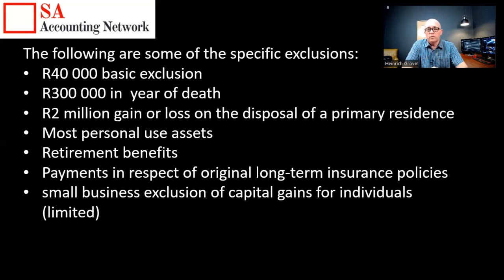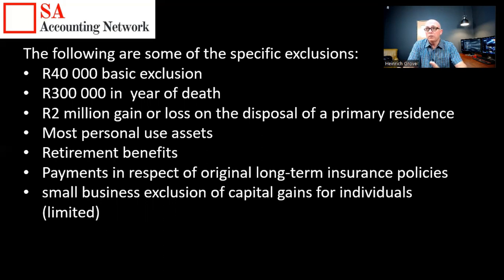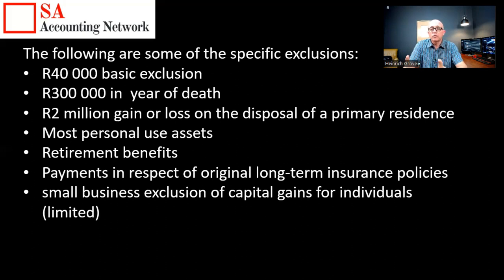There are a couple of exclusions — certain things you sell won't be subject to capital gains tax. The first exclusion is that every individual gets a 40,000 rand annual exclusion. So if you make a profit of 100,000 rand, everybody gets that 40,000 rand exclusion, meaning only 60,000 rand is assessed. Then 40% of that 60,000 rand is included in your income. Importantly, the 40,000 rand exclusion is only for individuals — companies cannot get this exclusion.